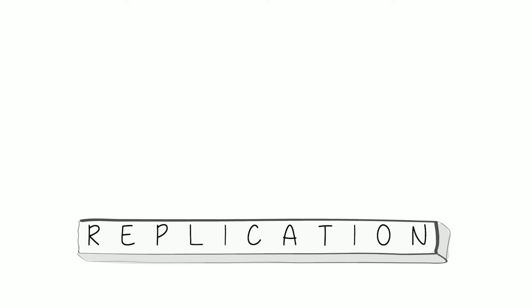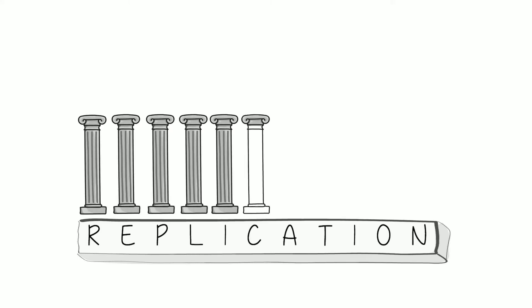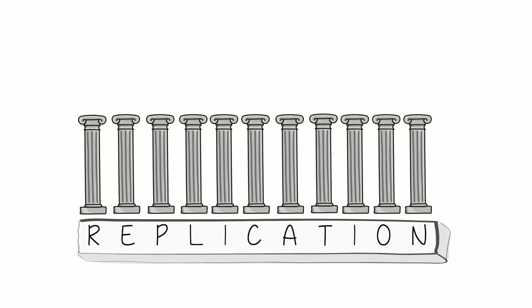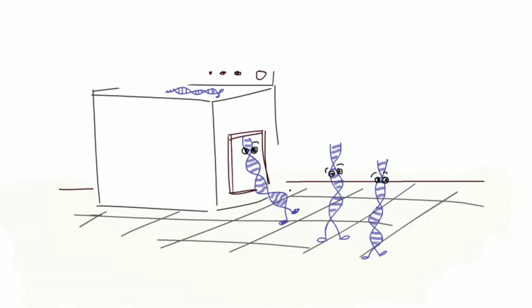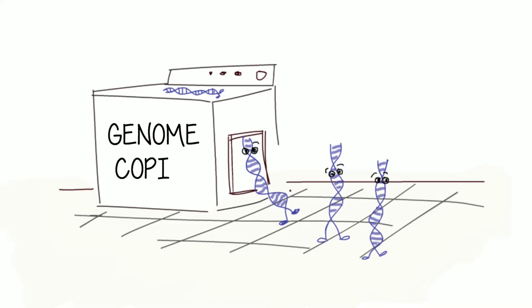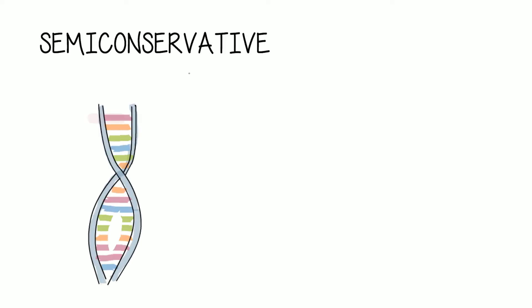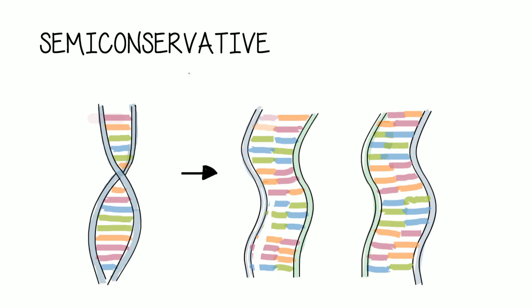DNA replication is the basis of biological inheritance. Cells asexually reproduce to create two genetically identical daughter cells. Part of this process involves replicating their entire genome so that both cells receive every gene. DNA replication is semi-conservative — one strand is used as a template for a new strand, and the two copies produced each contain one original and one new strand.